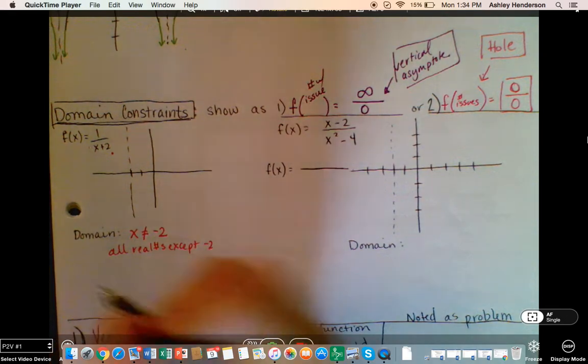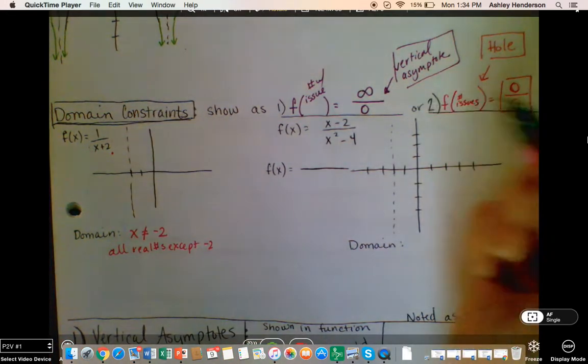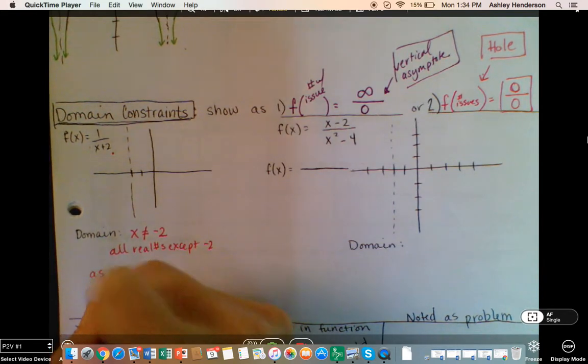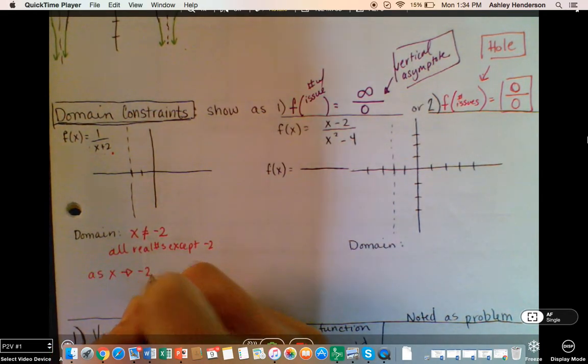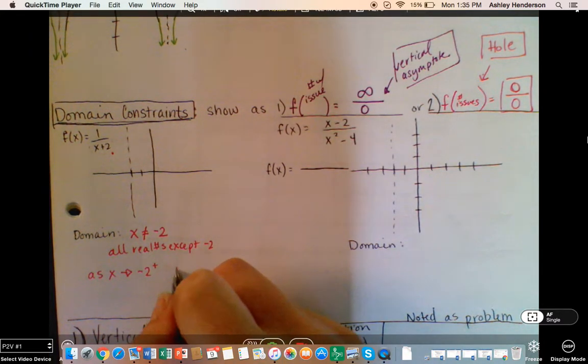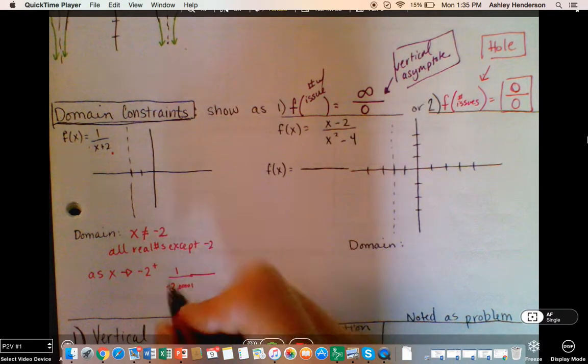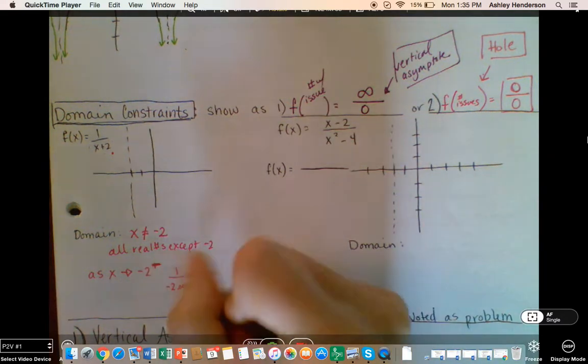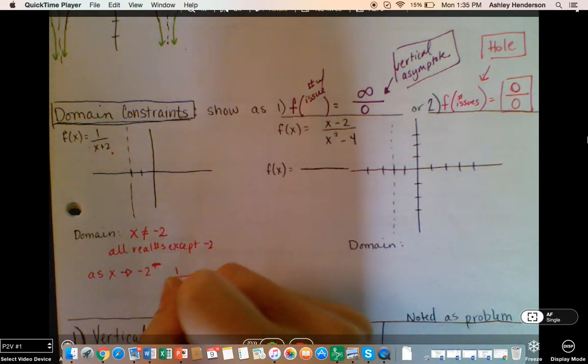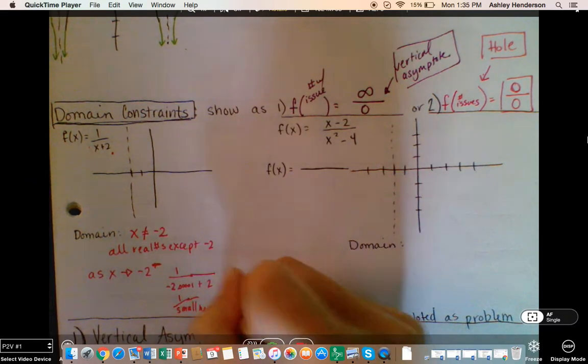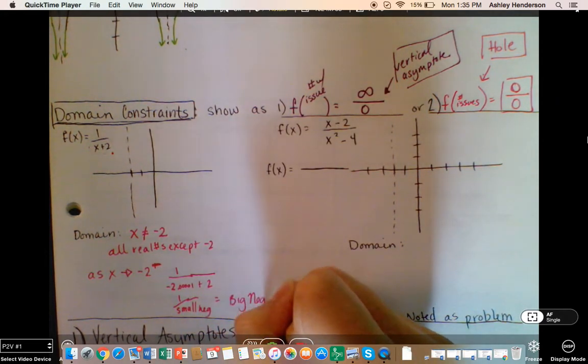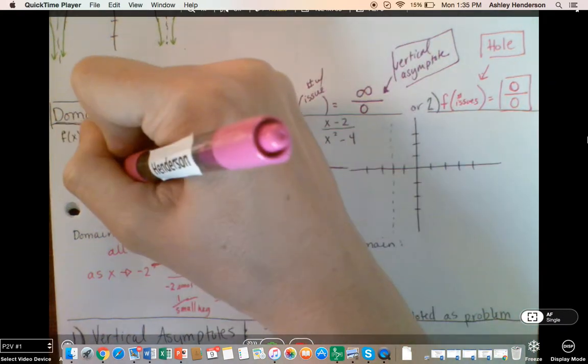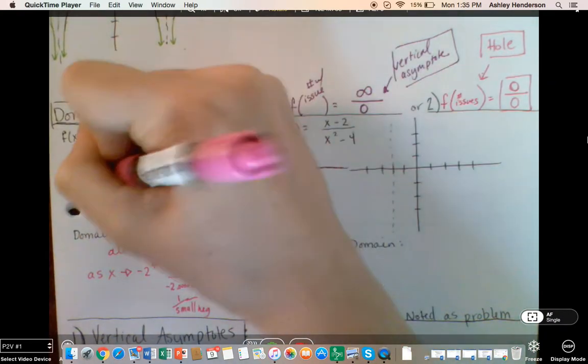So when I plug in that number, what happens? So as x approaches negative 2 from the right, I'm going to get 1 over negative 2.00001. Oops, that's not the right. That would be the left. Sorry. We'll do the left first. Plus 2, I'm going to get 1 over a really, really, really small negative number, which means we're going to get a big negative number, which means that this guy, as it comes from the left, is going to do this.